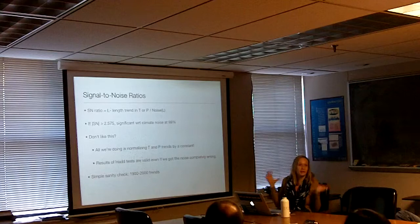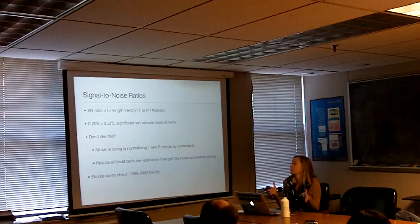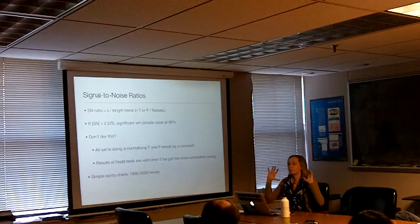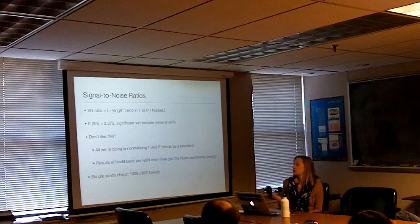If you think this is really stupid and don't want to pay attention, all we're doing is taking these trends and normalizing the temperature and precipitation trends by a constant. The results of the second hypothesis test — which I would argue is the more interesting one — are valid even if we got the noise completely wrong. So if you don't like this, forget I ever told you about it. But we can do it for free, why not?